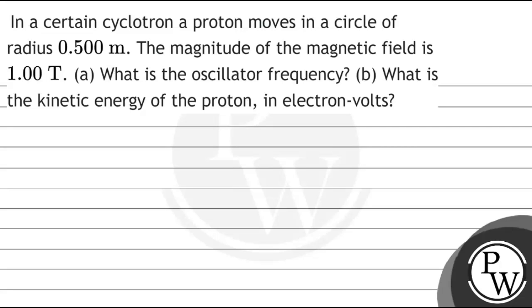Hello, let's read this question. In a certain cyclotron, a proton moves in a circle of radius 0.500 meters. The magnitude of the magnetic field is 1.00 Tesla. Part (a) asks: what is the oscillator frequency? And part (b) asks: what is the kinetic energy of the proton in electron-volts?